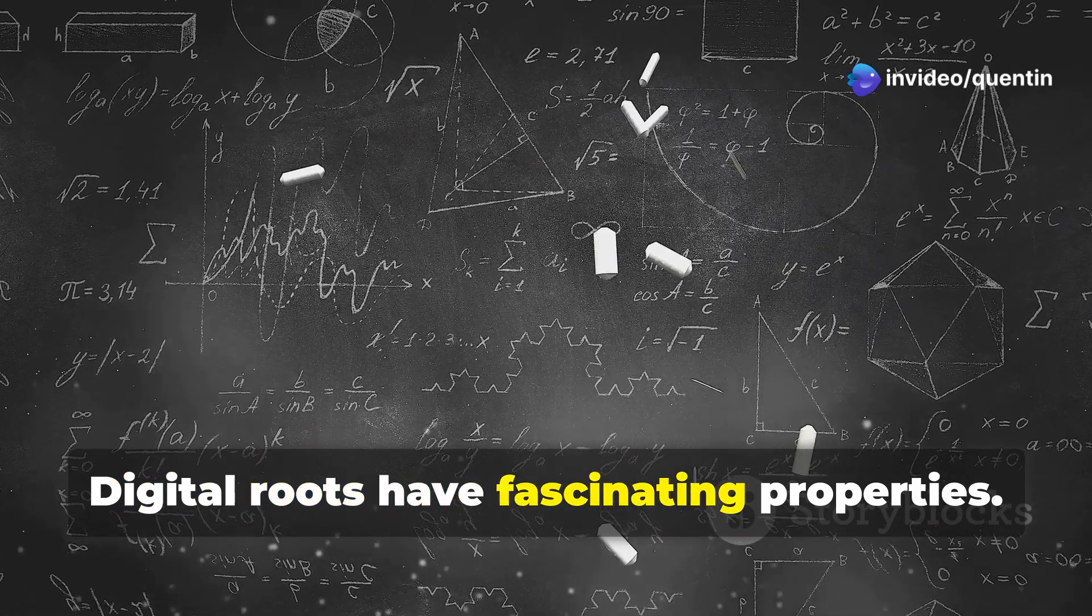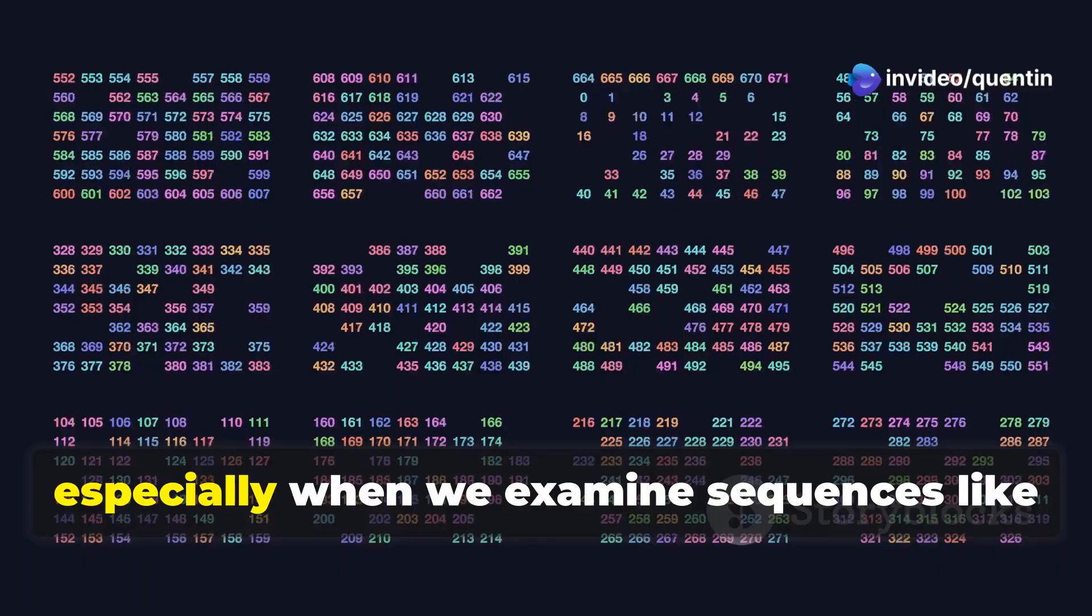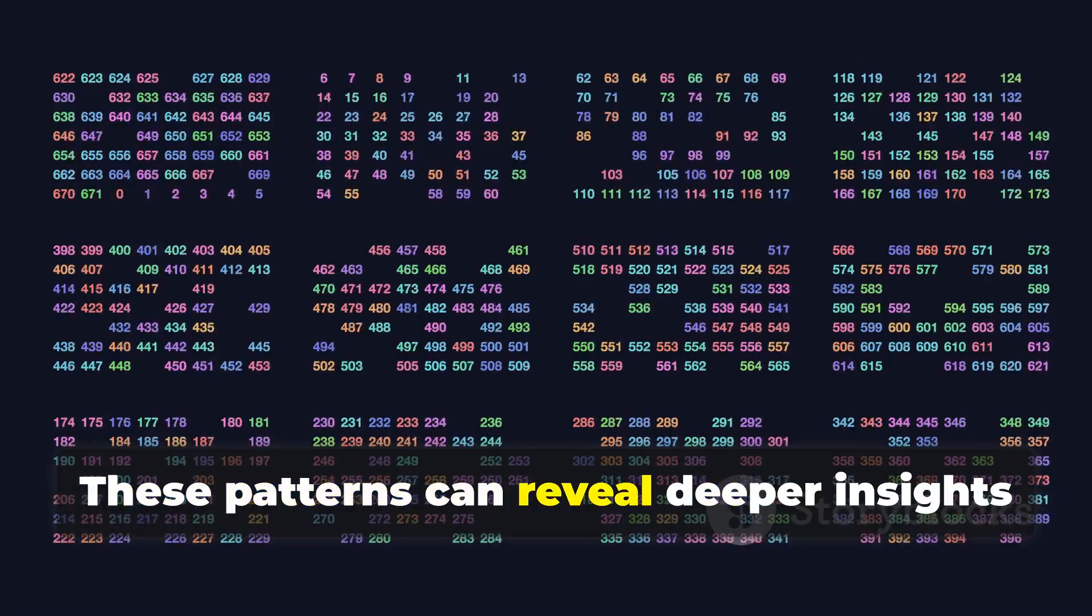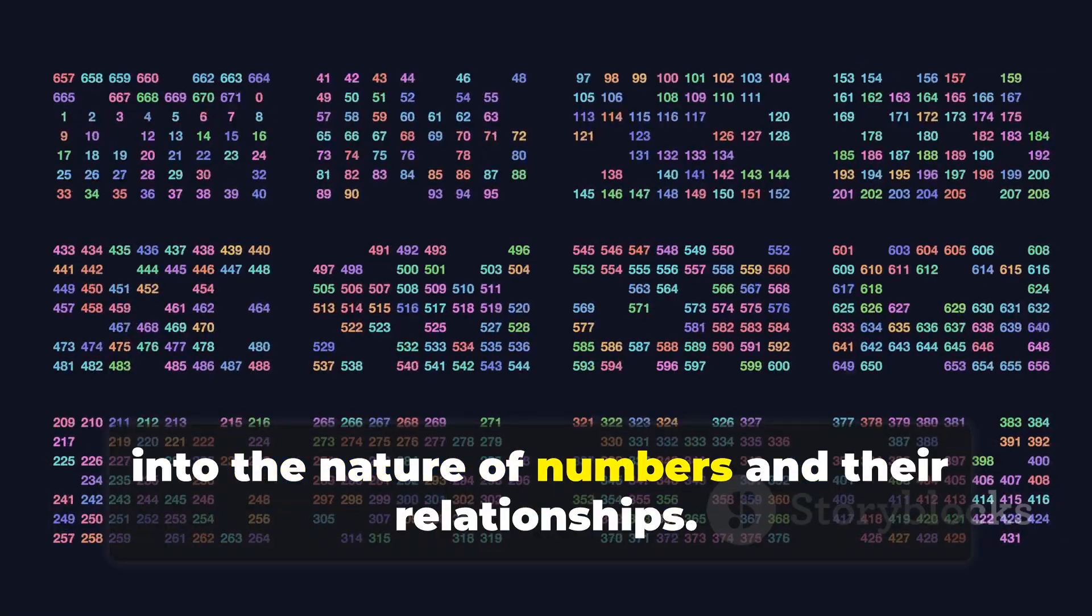Digital roots have fascinating properties. They follow predictable patterns, especially when we examine sequences like doubling numbers. These patterns can reveal deeper insights into the nature of numbers and their relationships.